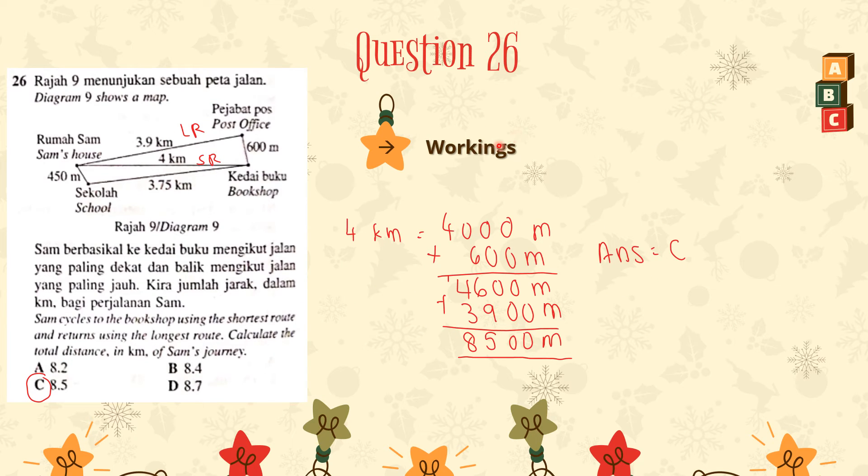Okay. Question 26. Diagram 9 shows the map. So this is the map and also Diagram 9. Sam cycles to the bookshop using the shortest route and returns using the longest route. Calculate the total distance in km of Sam's journey. Alright. So first, we have to identify which one is the longest route and which one is the shortest route. So that will be easier for us to count.